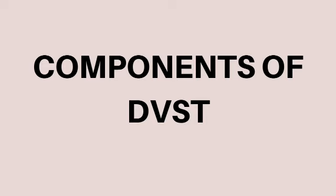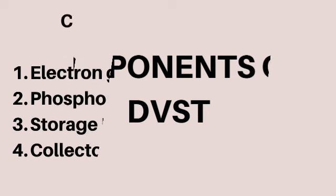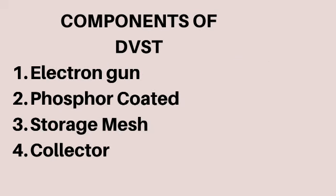After that, let's discuss the various components of DVST. The first component is the electron gun, the second is the phosphor-coated screen, the third is the storage mesh, and the fourth is the collector. Let's start with the electron gun. DVST uses two electron guns — the primary gun and the flood gun.